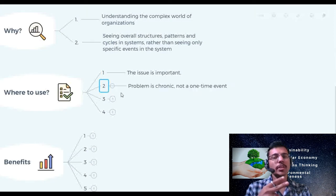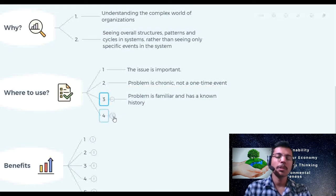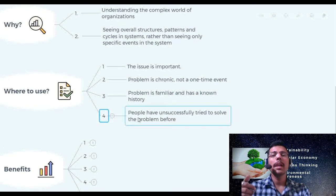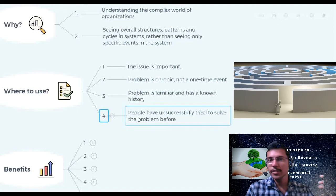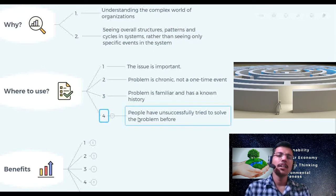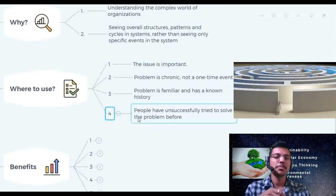Second is when the problem is chronic and not a one-time event. If a problem is recurring multiple times, we can use systems thinking. Problem is familiar and has a known history. We know that the problem has existed and we are currently facing that problem. And fourth is people have unsuccessfully tried to solve the problem before. If other analysis tools or problem-solving tools have failed, we can use systems thinking to solve that problem. By viewing this where to use it, you can understand how important systems thinking can be.